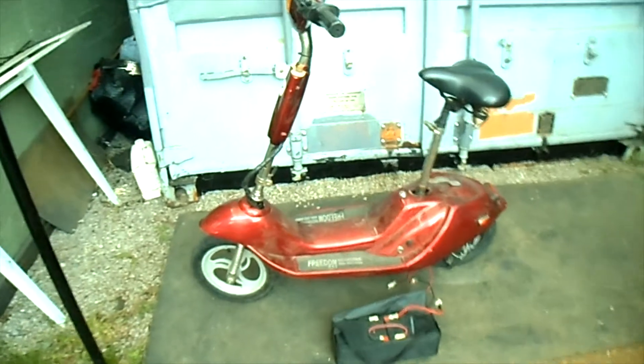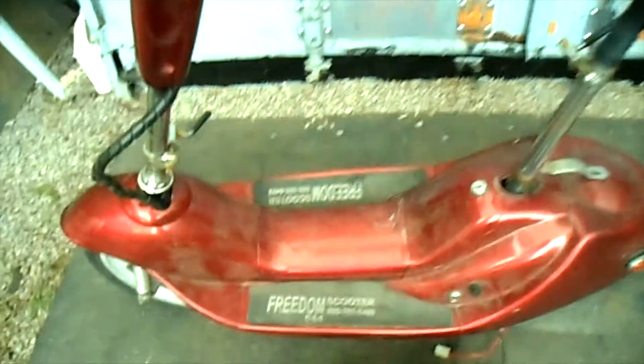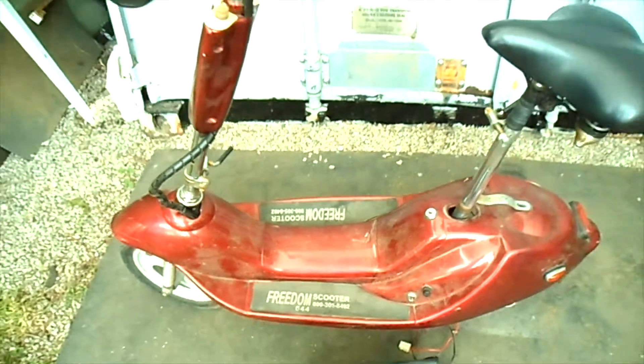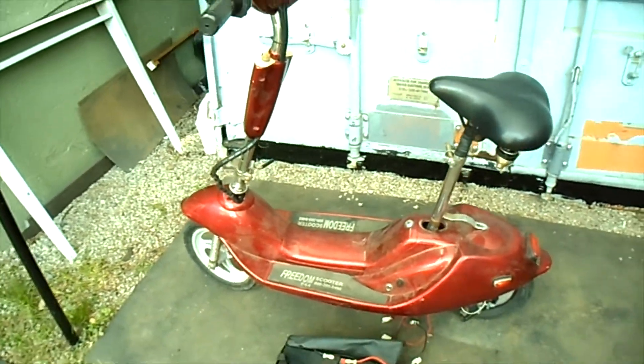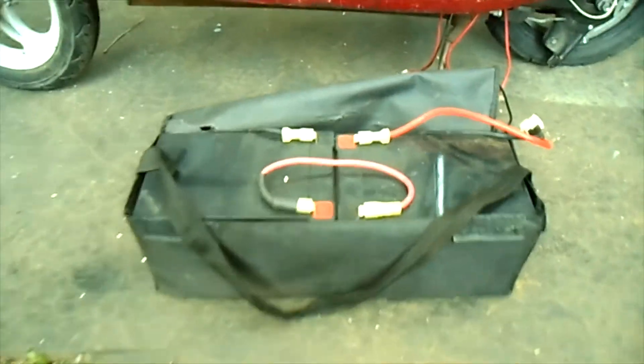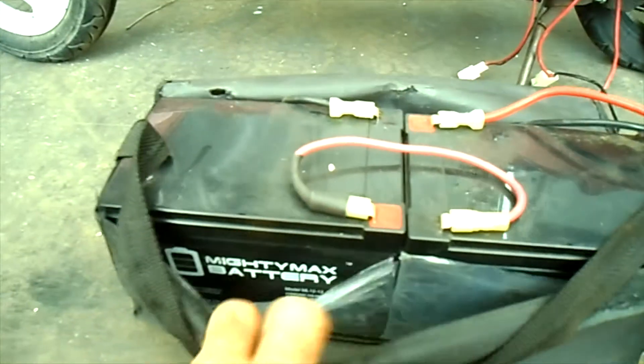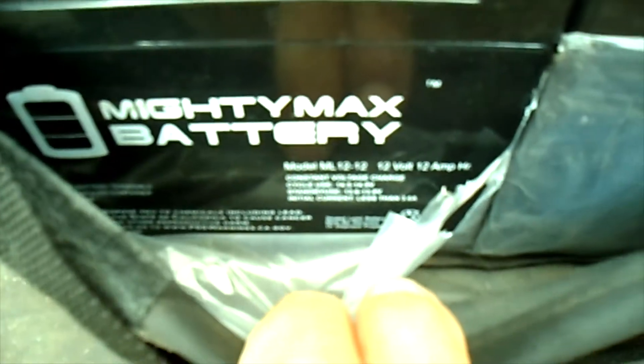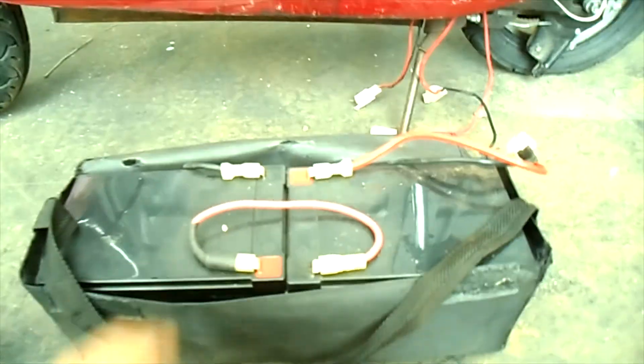Working on a new kind of project today. This is a little Freedom scooter that I fixed up for my daughter to ride around on. It's got these little 12-volt, 12 amp-hour SLA batteries.